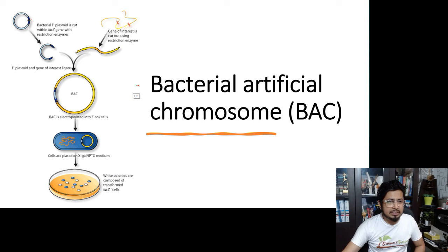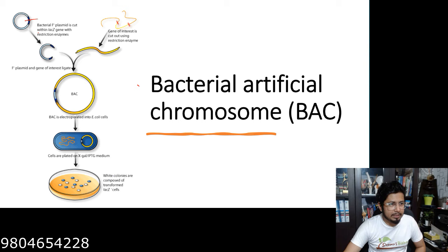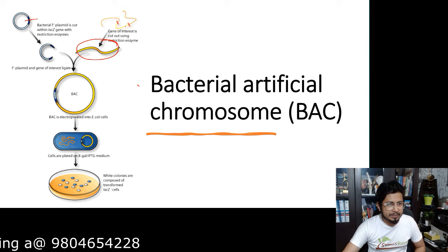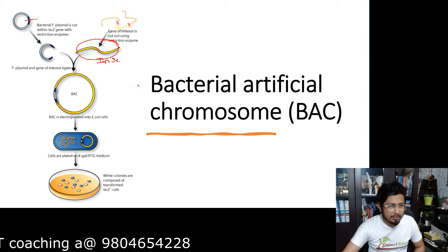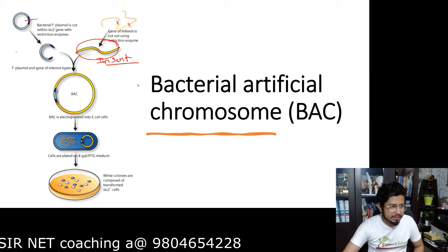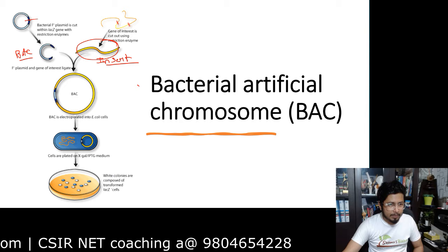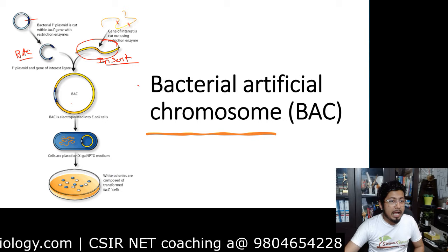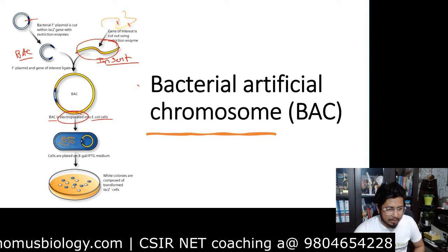In the diagram, the lacZ gene (blue) is cut at the cloning site, and the target insert (shown in yellow) is cut with the same restriction endonuclease. The insert is then joined into the BAC — shown with the light and dark blue representing the BAC backbone and the yellow as the insert — and the insert is properly ligated in.